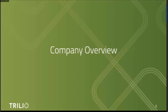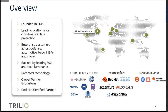Trilio was founded in 2013. We are the leading data protection solution for OpenStack and RHV environments, with enterprise customers located all over the globe. We've been in the business for seven years, developing innovative patented technologies. From a partner ecosystem perspective, we are a Red Hat and IBM partner — a Red Hat certified partner — with products for OpenStack, Red Hat Virtualization, and now pivoting to address cloud native data protection needs.